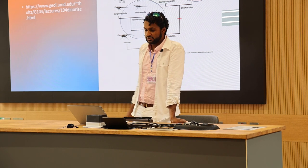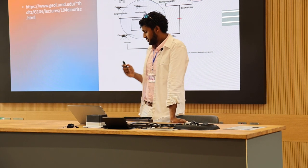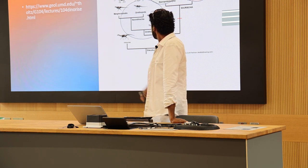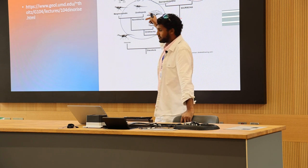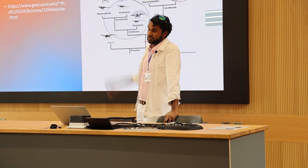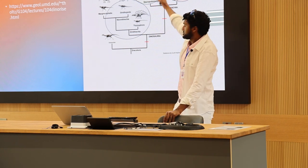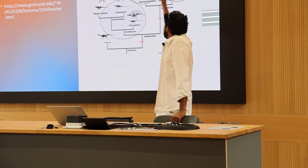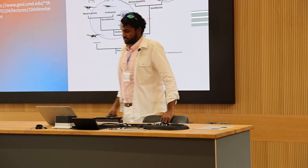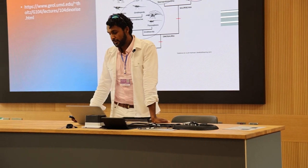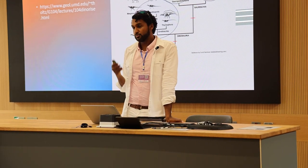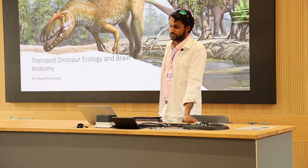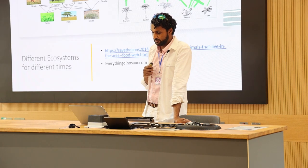Dinosaurs are grouped into three main clades. You have the ornithischians, with famous dinosaurs such as Stegosaurus, Triceratops and hadrosaurs. You have the sauropodomorphs, which include all the long-necked, long-tailed ones such as Brachiosaurus and Apatosaurus. And then you also have the theropods, which includes dinosaurs such as Tyrannosaurus rex, but also birds. So birds are, in fact, dinosaurs. This is where it comes down to my area of study: theropod dinosaur ecology and brain anatomy.